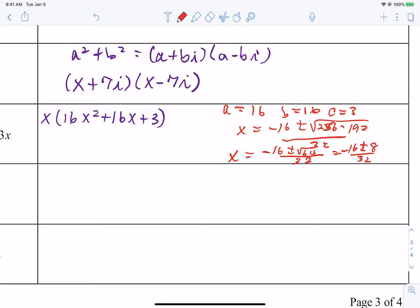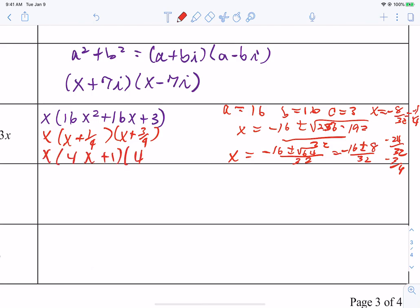And so negative 16 plus 8 is negative 8 over 32. So negative 8 over 32 is negative 1/4. And then the next one is negative 16 minus 8, which is negative 24 over 32. What does that reduce down to? Negative 24 over 32 reduces to negative 3/4. So it did factor. I'm so sorry. I lied. I really assumed it didn't factor. But this is why I found the factors. So the factors were 1/4 and 3/4.